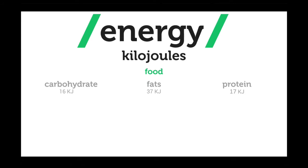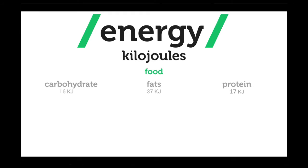We get this energy from food, which can be broken down into three elements: carbohydrates, fats, and protein. Each of these elements contains a different amount of kilojoules. For each one gram of carbohydrate there are 16 kilojoules, for each one gram of fat there are 37 kilojoules, and for each one gram of protein there are 17 kilojoules.